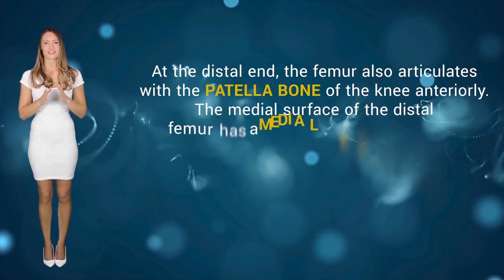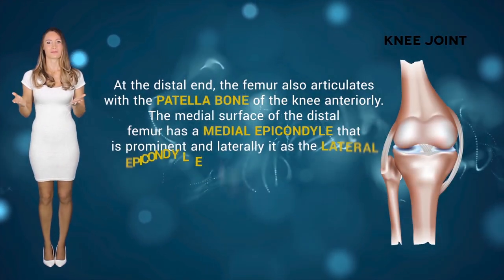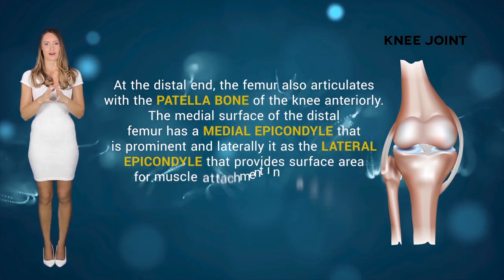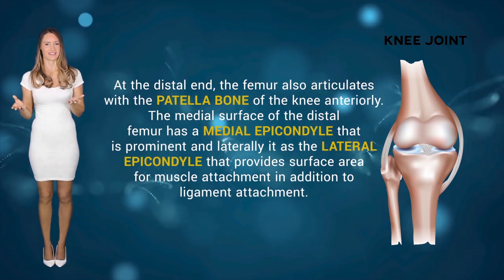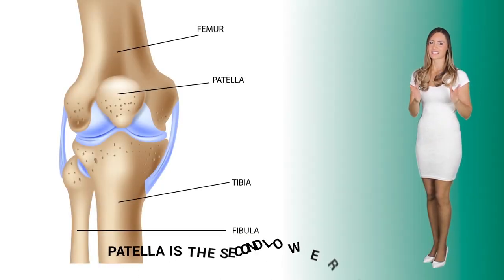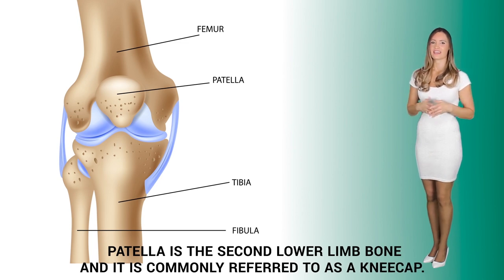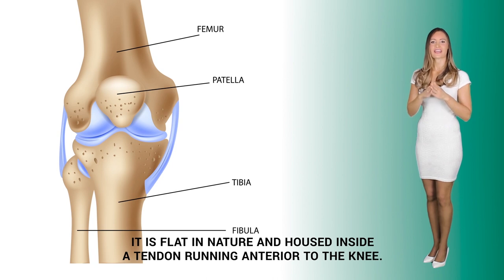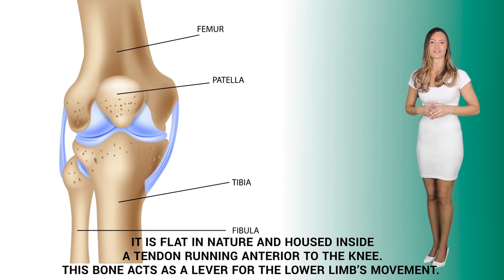At the distal end, the femur also articulates with the patella bone of the knee anteriorly. The medial surface of the distal femur has a medial epicondyle that is prominent, and laterally it has a lateral epicondyle that provides surface area for muscle attachment. The patella is the second lower limb bone and is commonly referred to as the kneecap. It is flat in nature and has a tendon running anteriorly to the knee. This bone acts as a lever for the lower limb's movement.